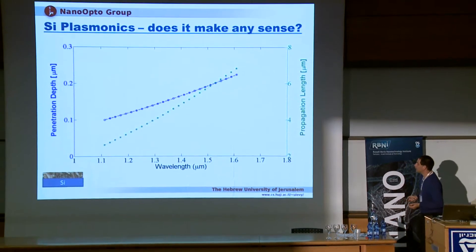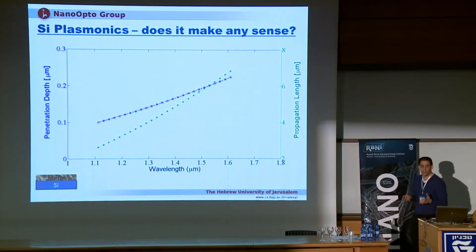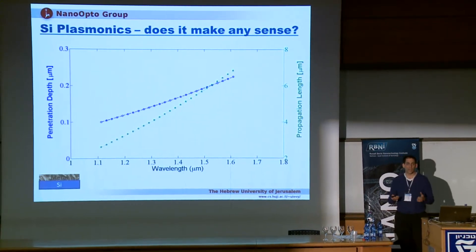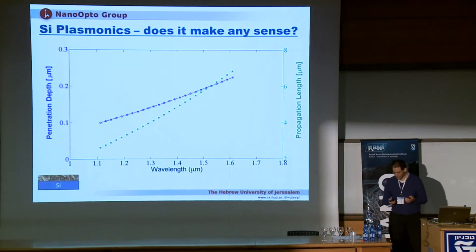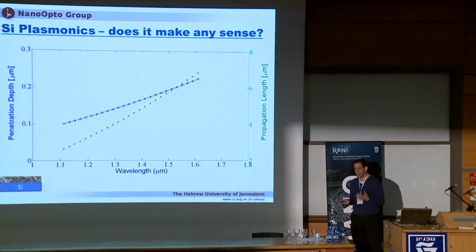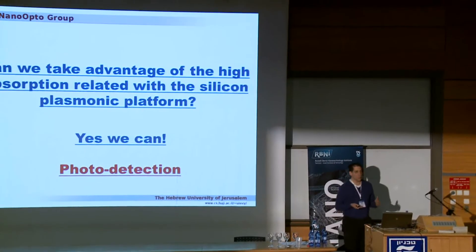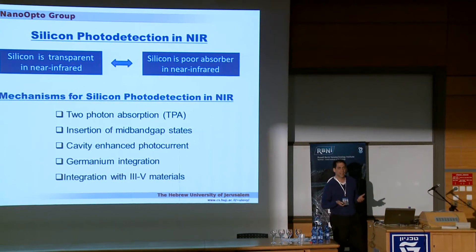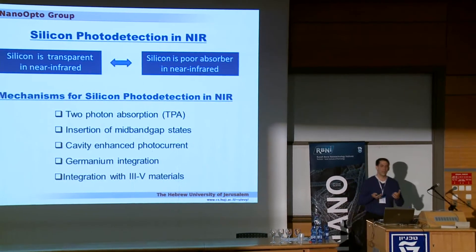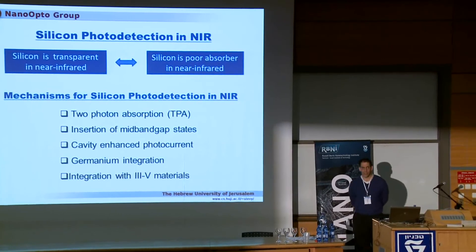There is not much plasmonic gain, so to speak. At the same time, propagation length is only a few microns and confinement is not that great. At a wavelength of 1.55 microns, we are talking about a decay length of about 200 nanometers into the silicon. So it looks like there is no much benefit of using silicon plasmonics, but it turns out that for some applications there is a huge benefit — specifically for photo detection using layers of silicon and metal.